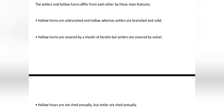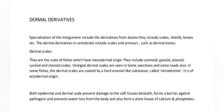Antlers and hollow horns differ from each other by these main features: hollow horns are unbranched and hollow, whereas antlers are branched and solid. Hollow horns are covered by a sheath of keratin, but antlers are covered by velvet. Hollow horns are not shed annually, but antlers are shed annually.